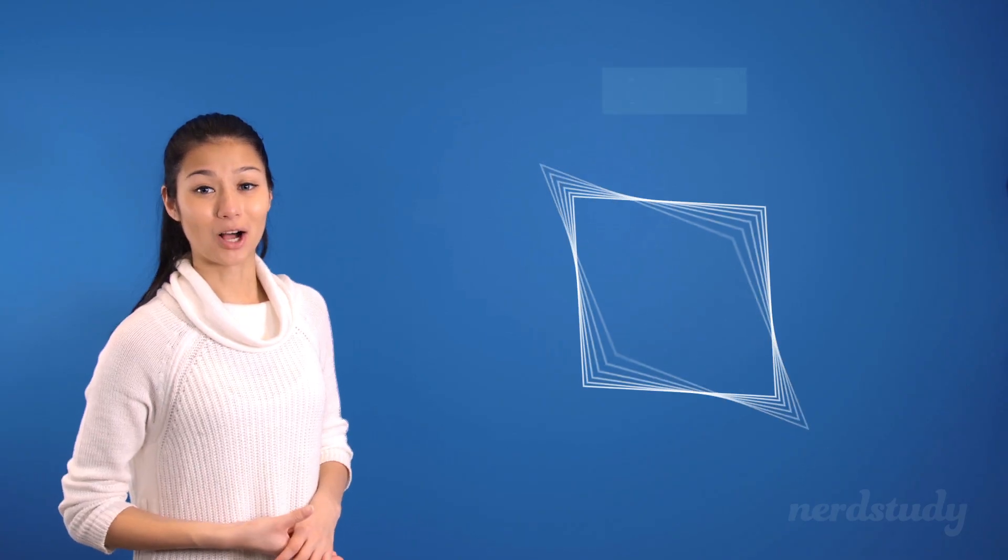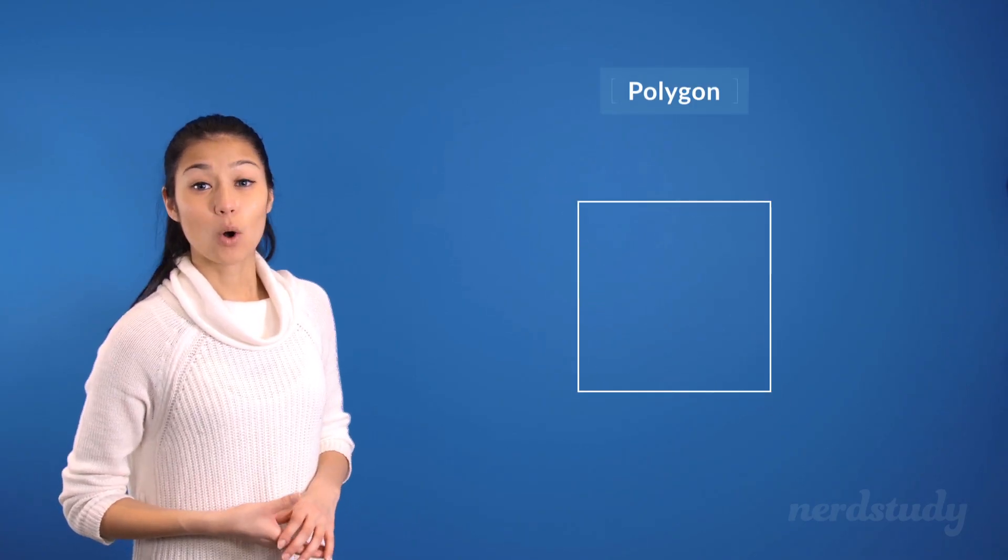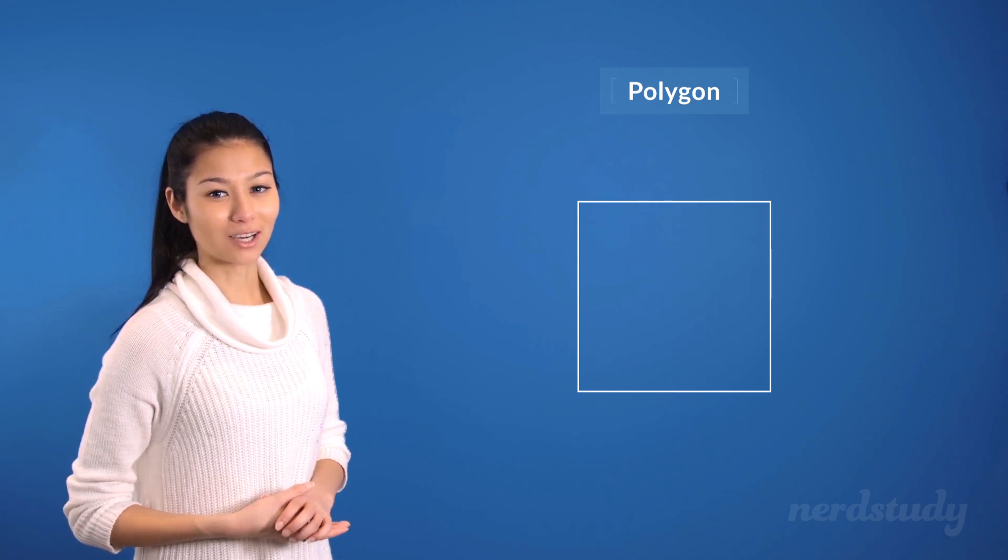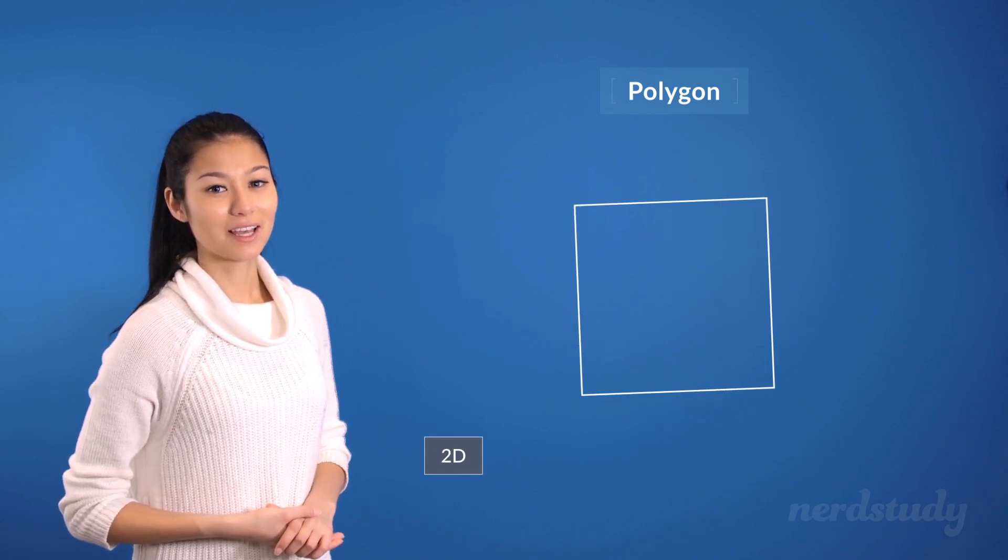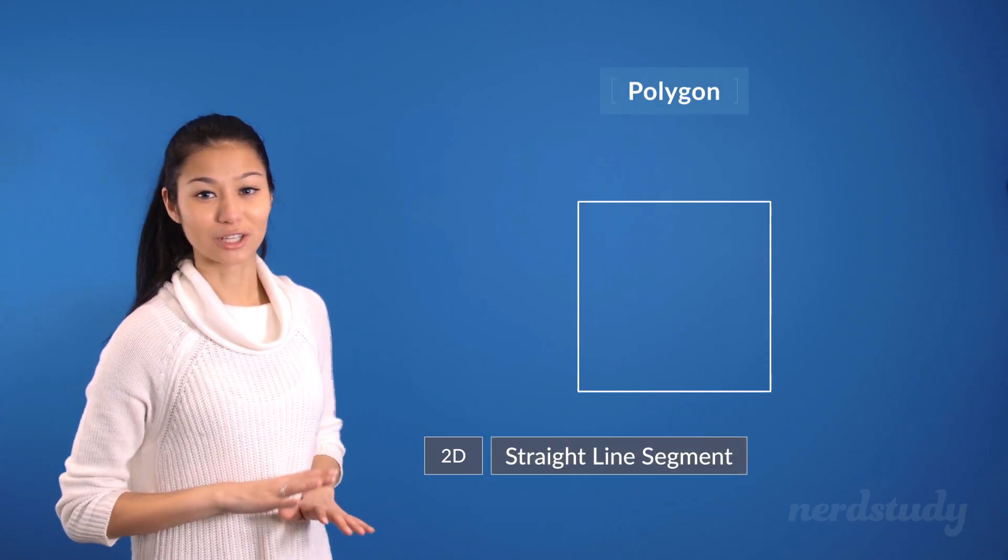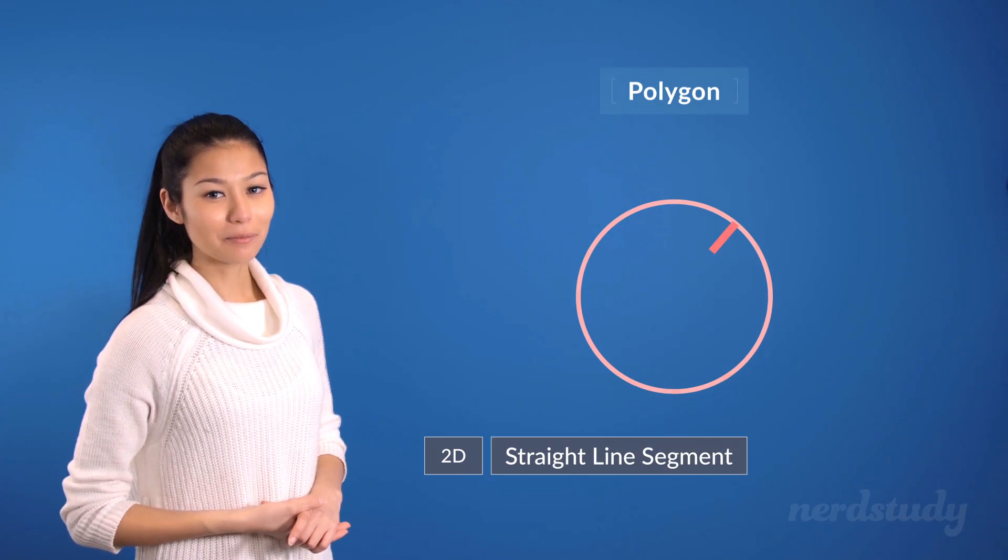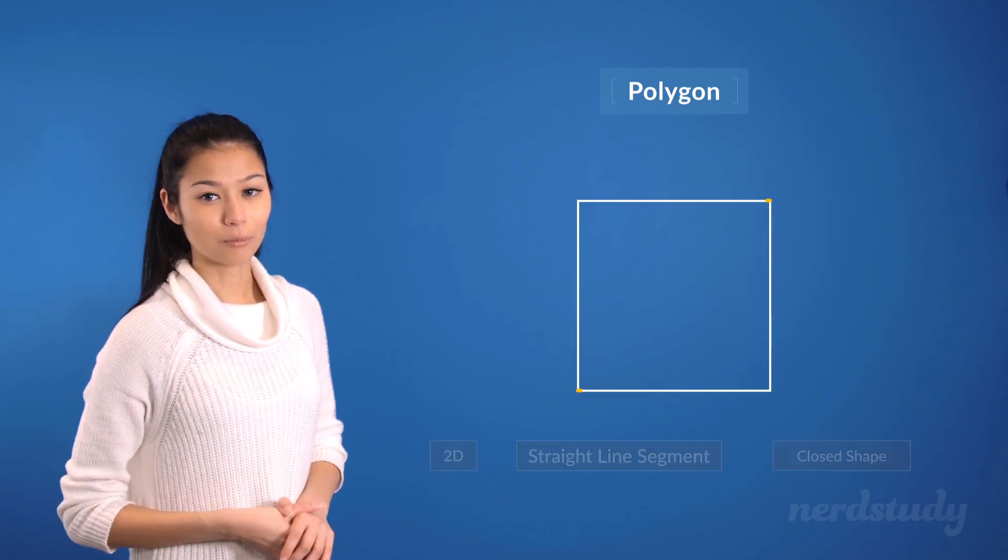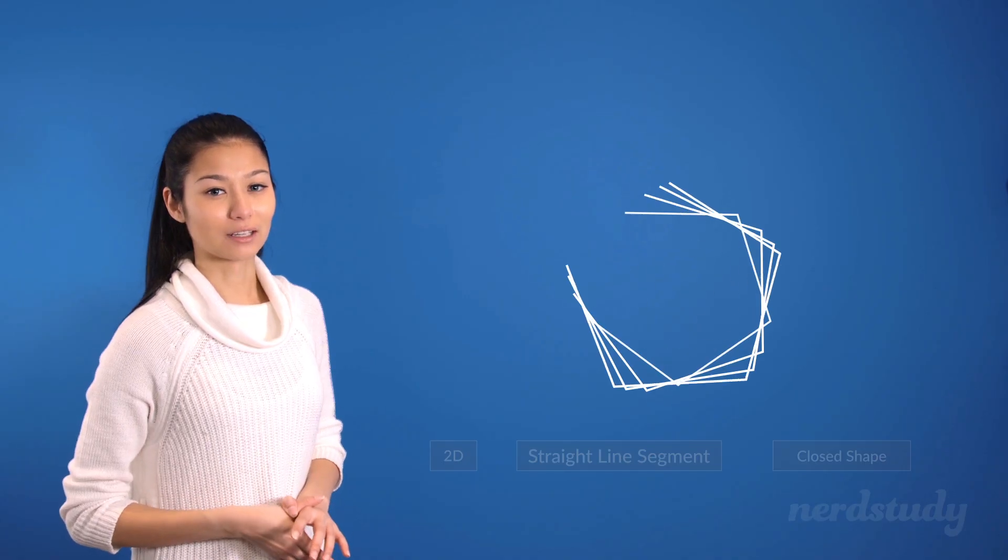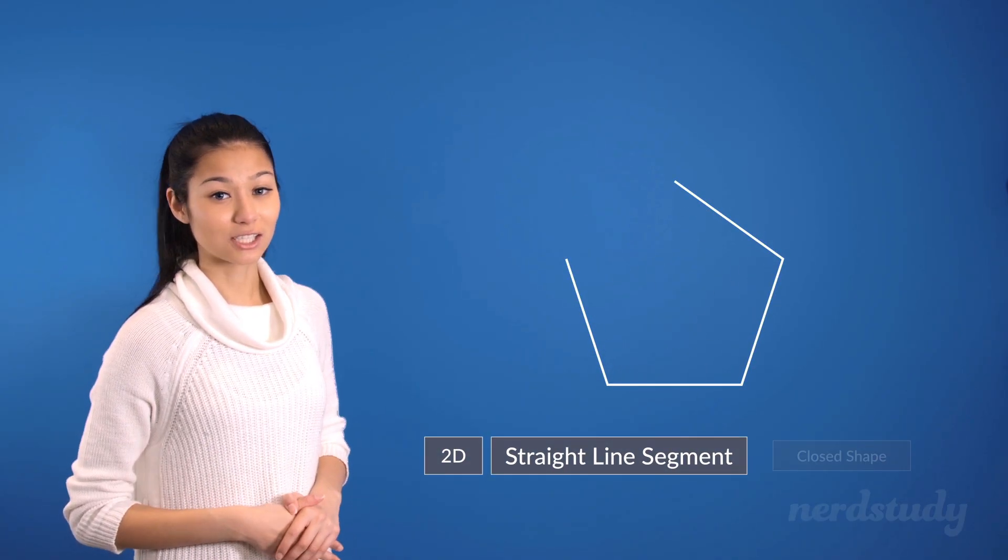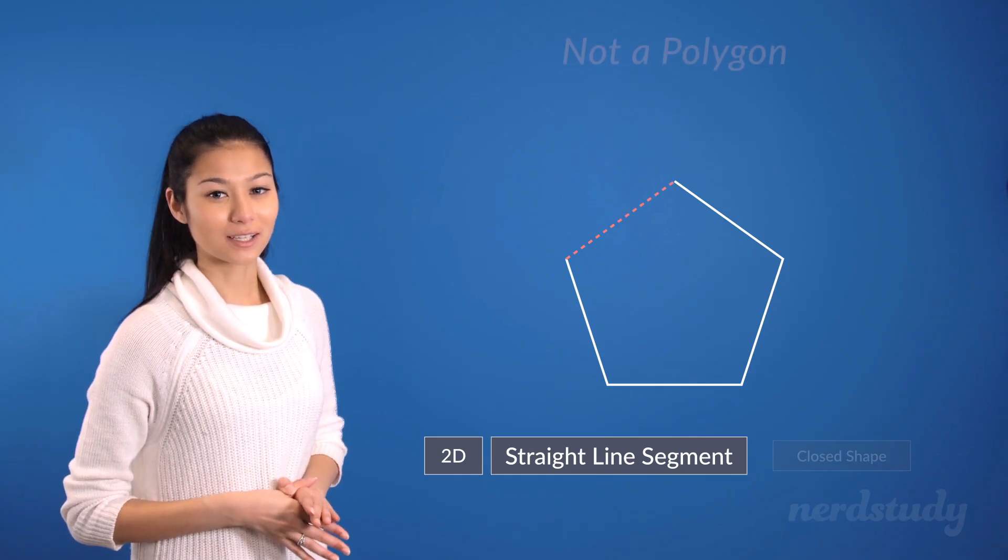Let's begin with an example of a polygon here. What are the characteristics of a polygon? A polygon is a two-dimensional shape that is made up with straight line segments, which means absolutely no curves. The shape for a polygon is always a closed shape. While this shape over here is two-dimensional that's made up of straight lines, since it does not close up, it is not considered a polygon.